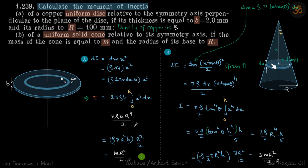Let's say our elemental disc is at a distance x. If the cone half-angle is θ, then this distance becomes x tan θ, and the height of the disc we're taking as dx.